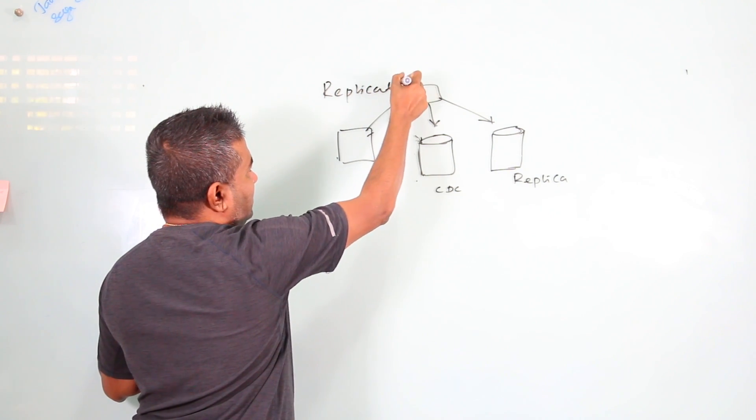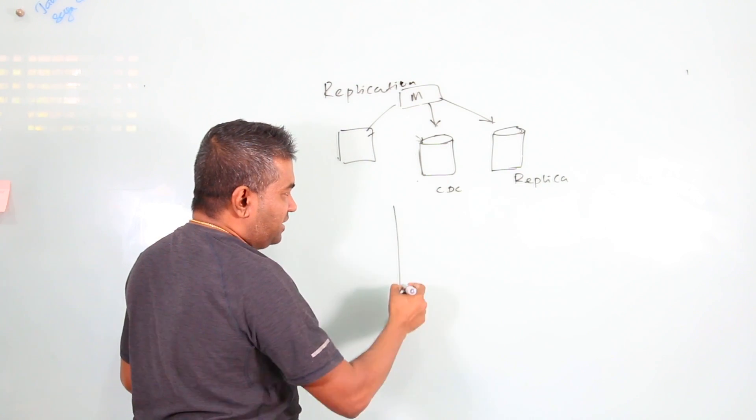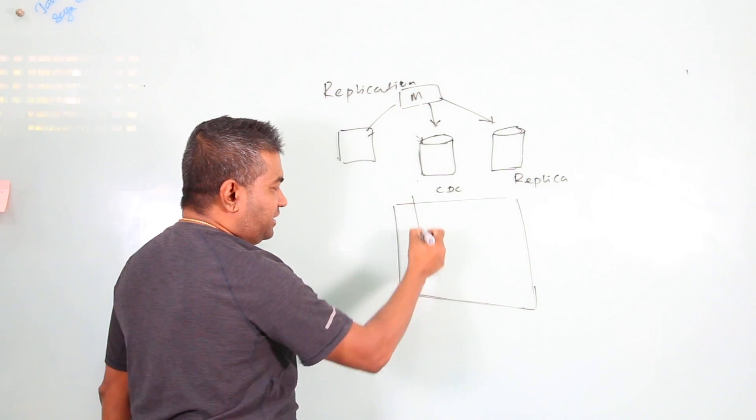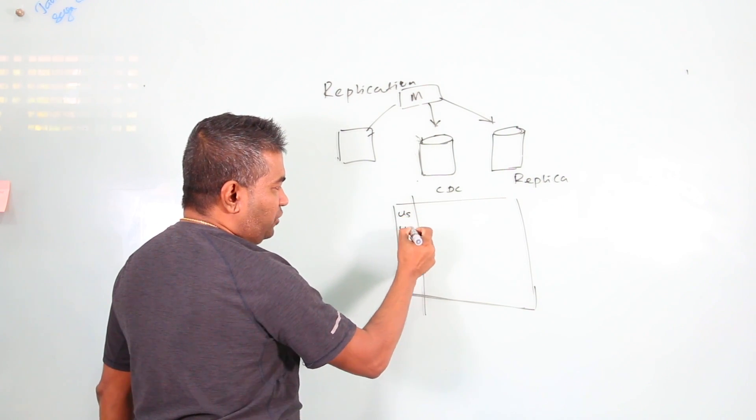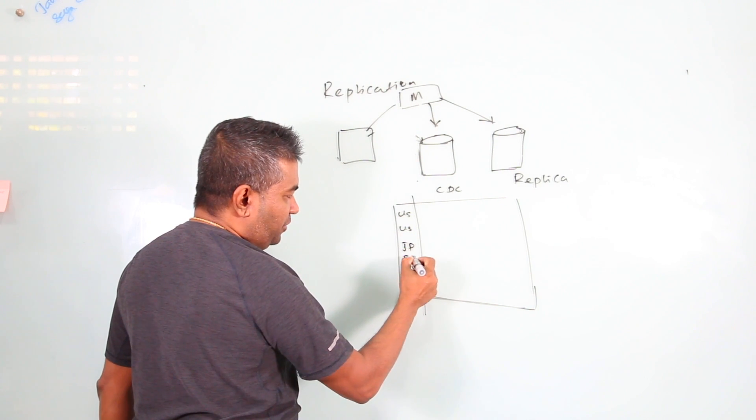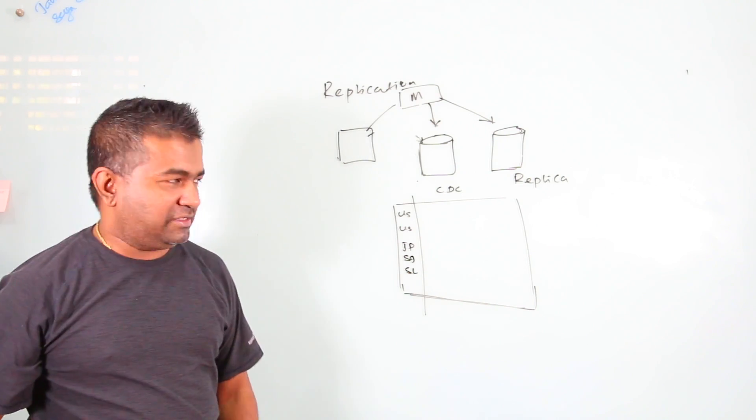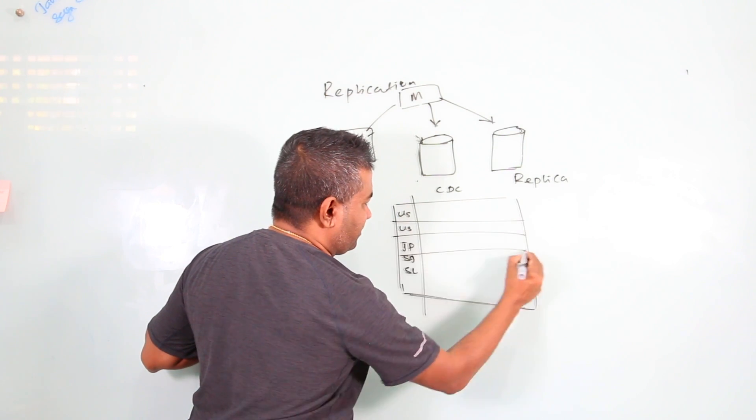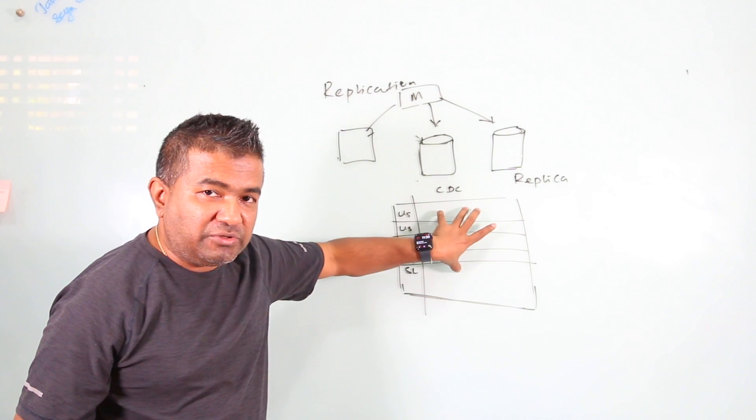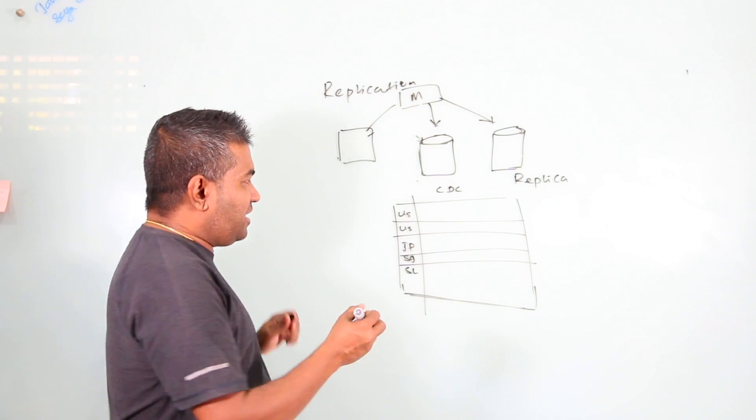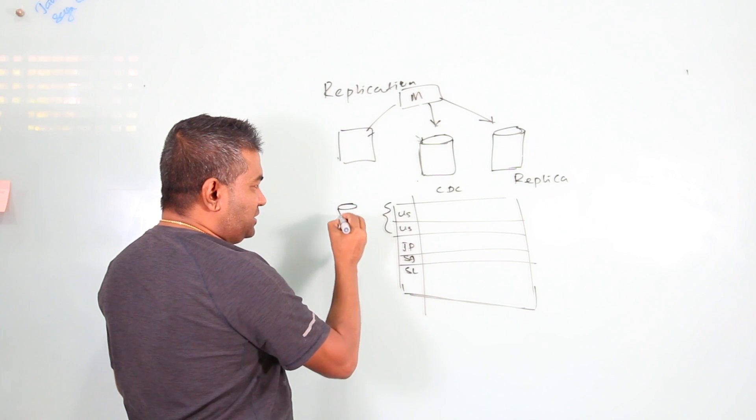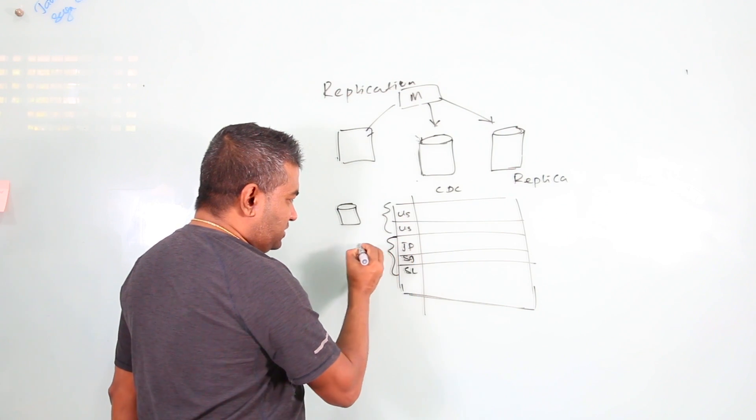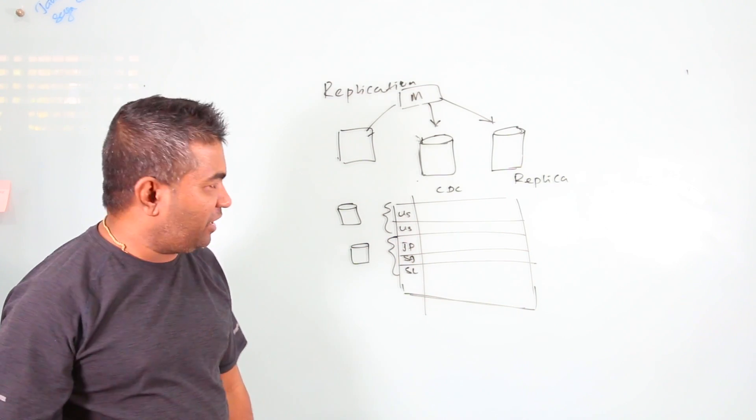So now let's see what is the sharding. Let's say in the database you have customers, the region-wise. Let's say US, and then Japan, Singapore, Sri Lanka, something like that. So what you can do is, these are rows, these are particular customer records. So now what you can do is you can tell the database, hey, go and store this data on the database which is in the US region. Go and store this data in the database which is in the Asia region, something like that.